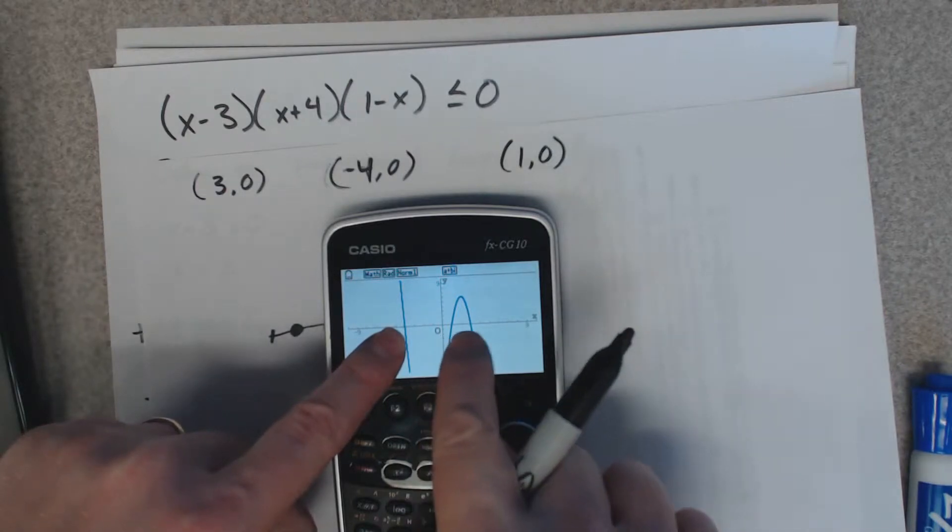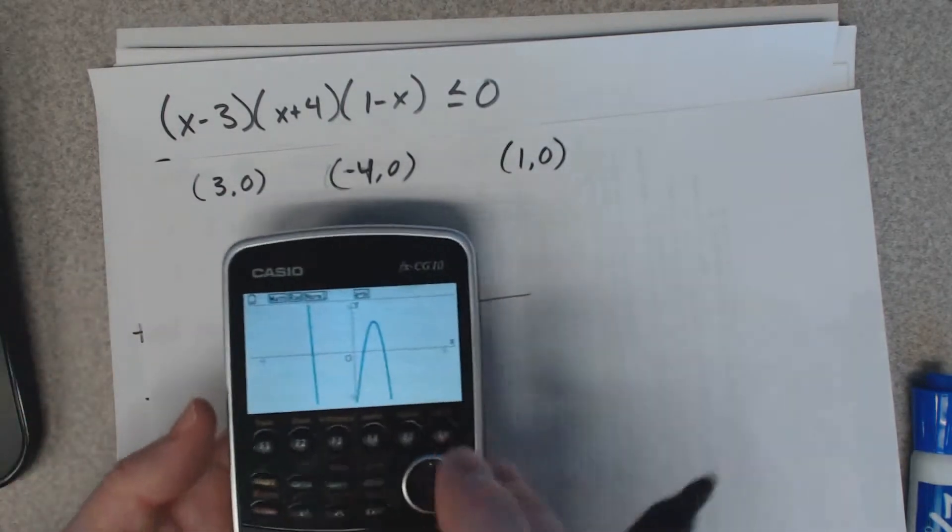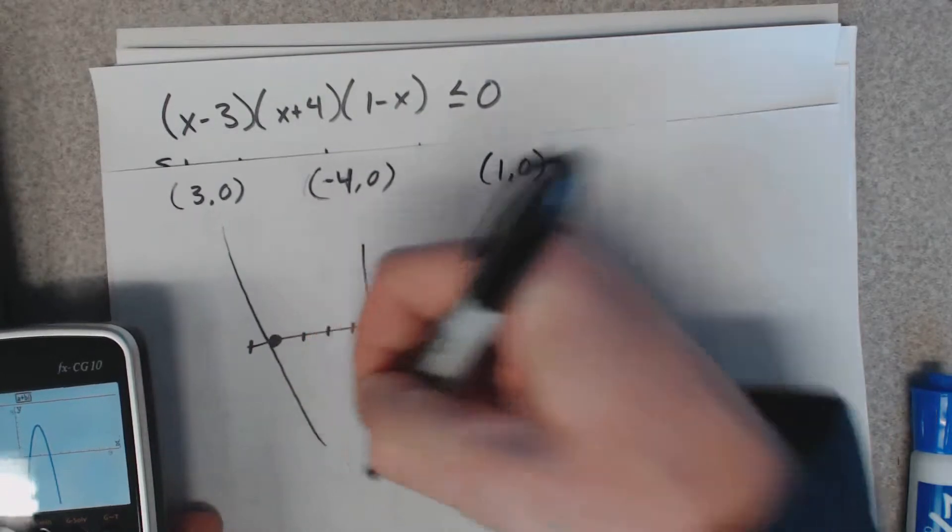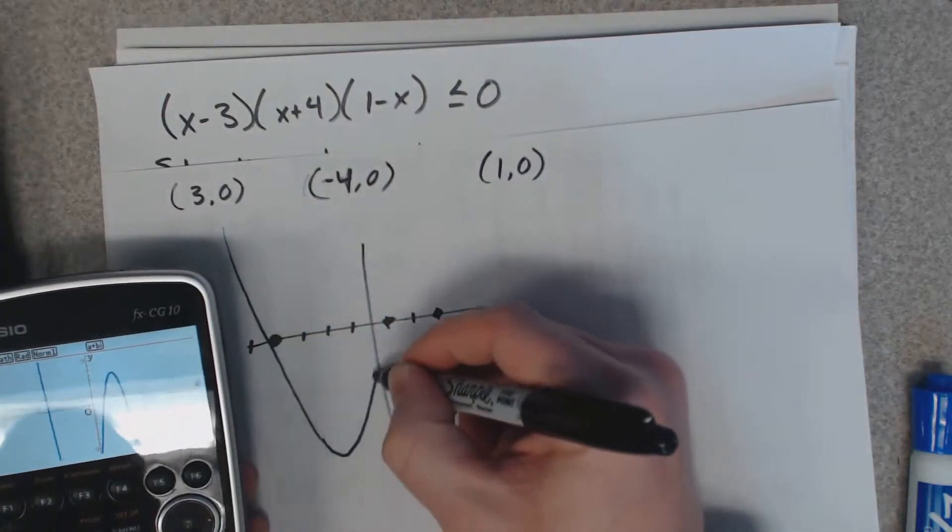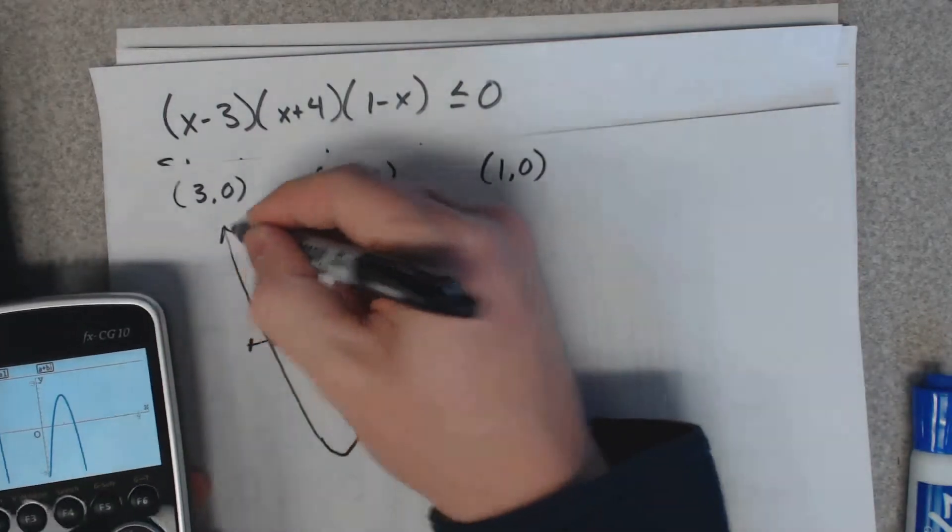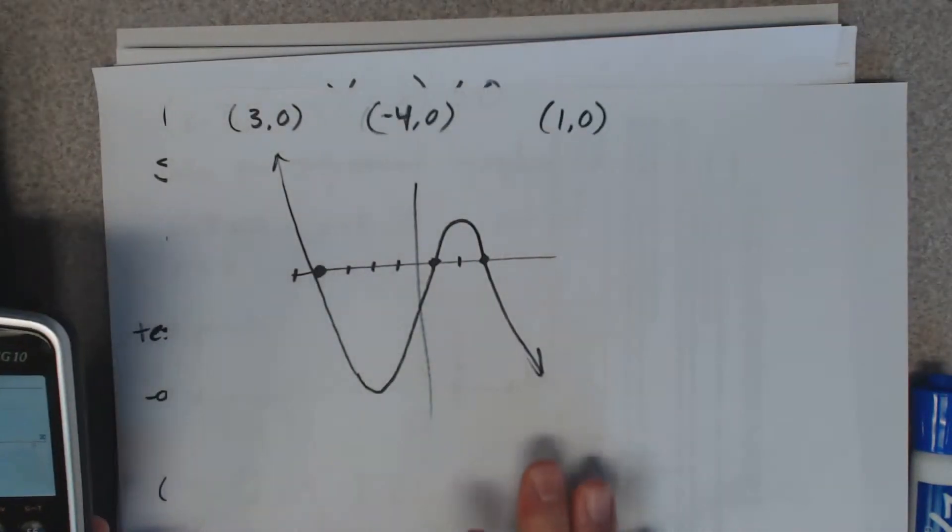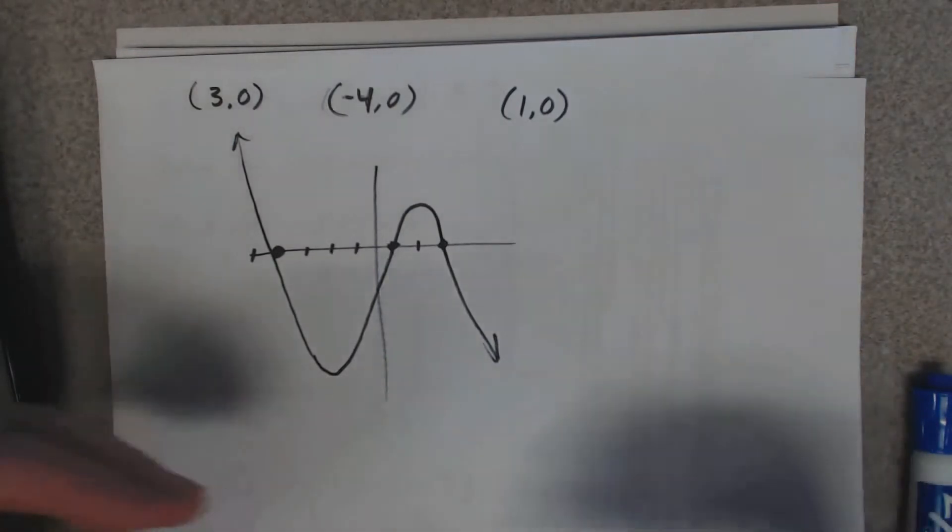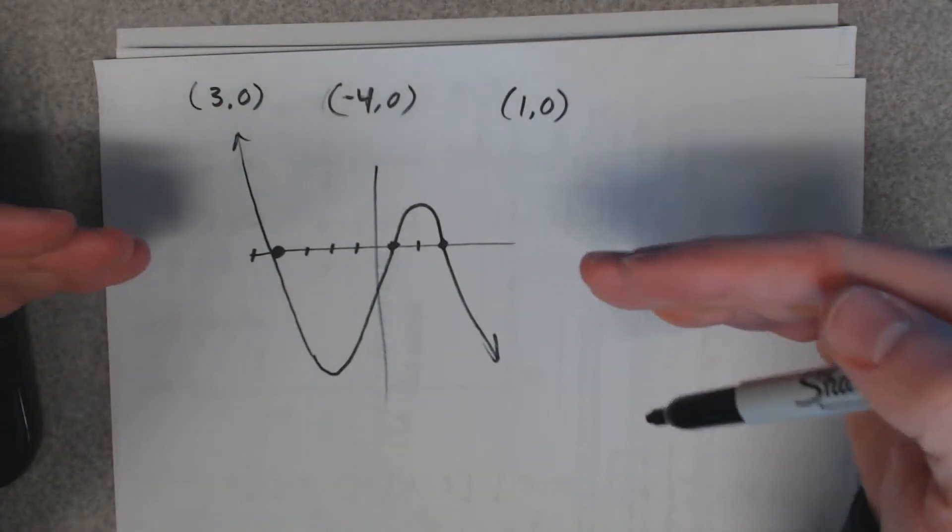There's now your 4, the 1, and the 3. So it looks like it comes down this way, it's off the charts, but I'm just gonna make it kind of back around. Doesn't have to be exact because all you really care about is what part of the graph is above the x-axis and what part is below the x-axis.